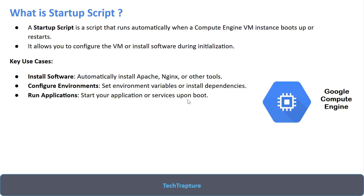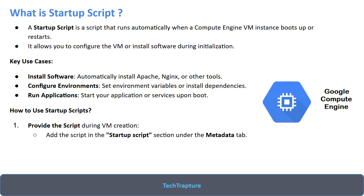You can also start your application or service upon boot — all these tasks can be automated using the startup script. You can provide the script either during VM creation or reference a script stored in a GCS storage bucket. In this video we'll automate deployment using both options: first directly at VM creation, then from a storage bucket.